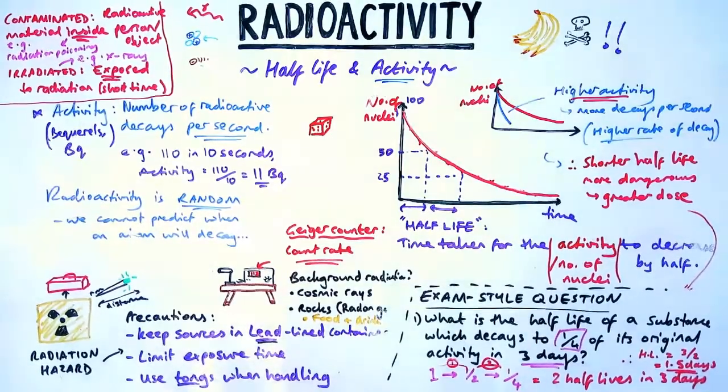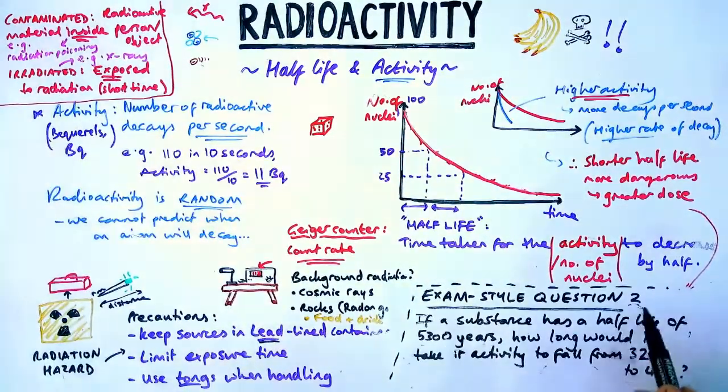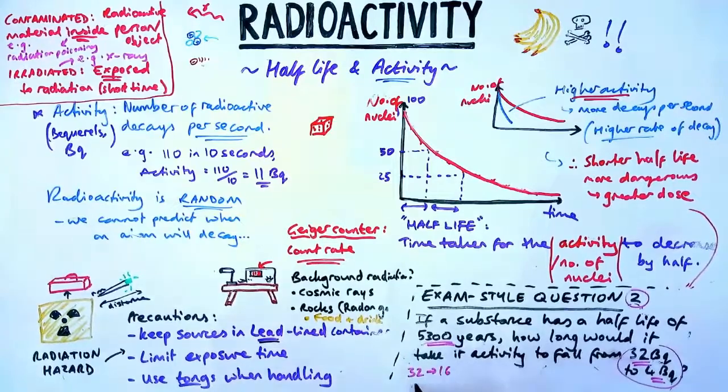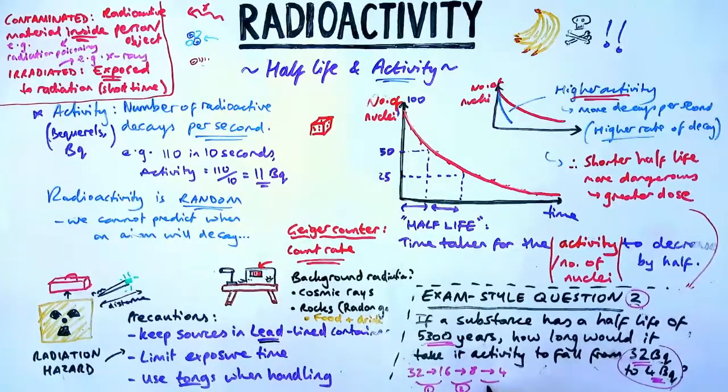This next example is a little bit trickier because we are talking about knowing the half-life and trying to work out how long it would take. So it says here a substance would fall from 32 becquerels to 4 becquerels. How long does it take to do that? So let's figure out how many times it's halved.